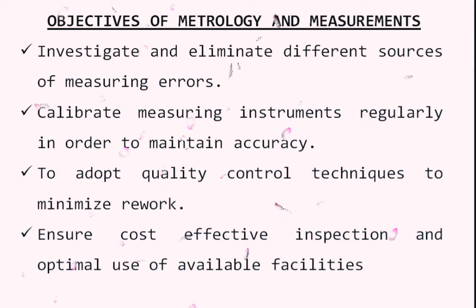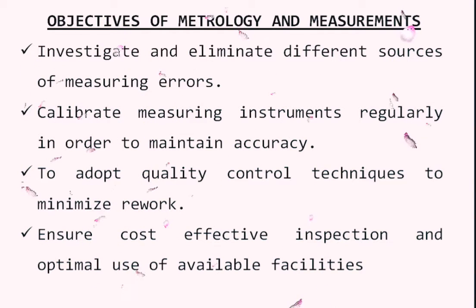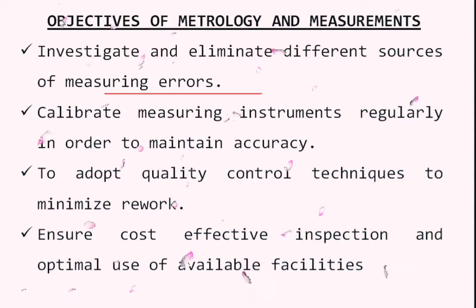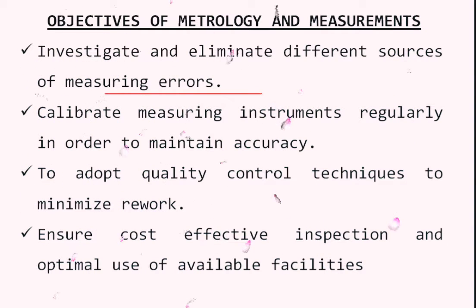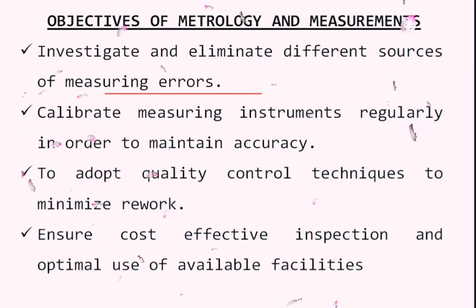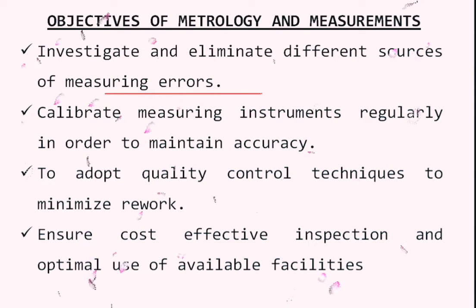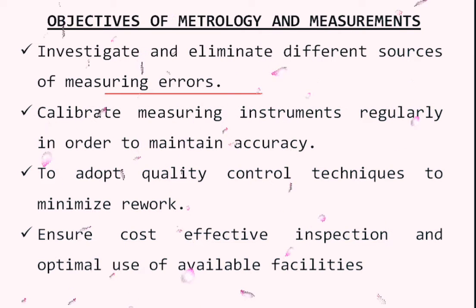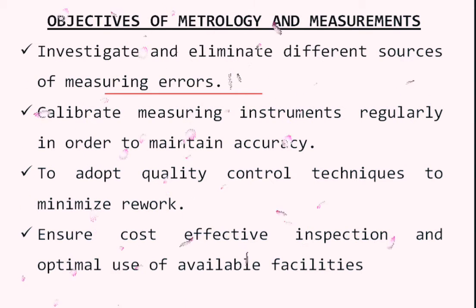The objectives of metrology and measurements include: first, to investigate and eliminate different sources of measuring errors. Various factors are involved, and the main aim is to reduce or remove errors from the measurement conditions. Second, to calibrate measuring instruments regularly in order to maintain accuracy.